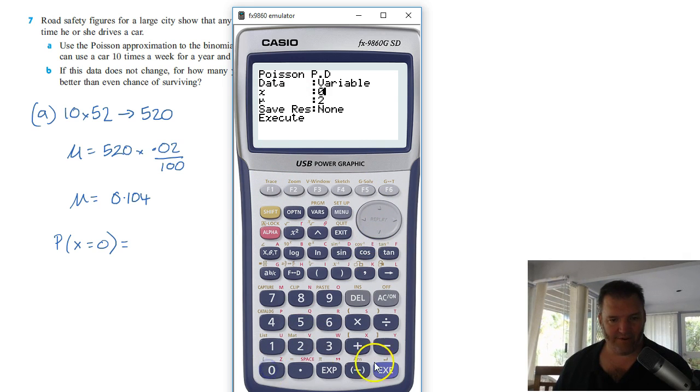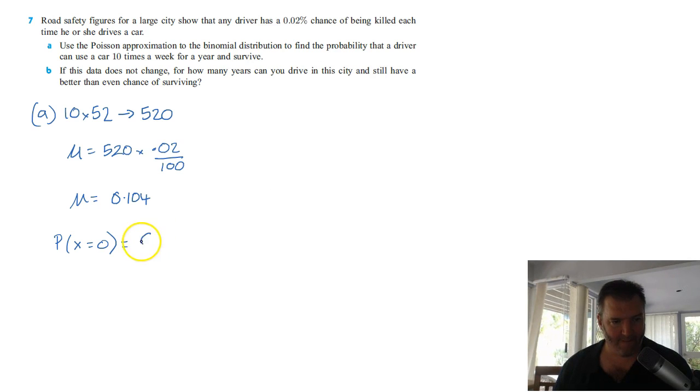We want to know the chance of not dying at all, given that the probability is 0.104. That's the expected number of deaths in the year. What have we got? Calculate that. 0.9012. So, pretty good chance of surviving the year.